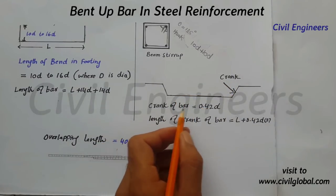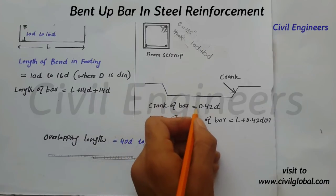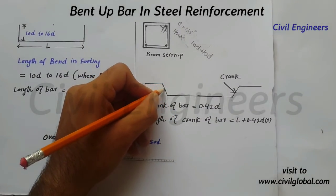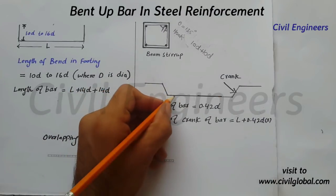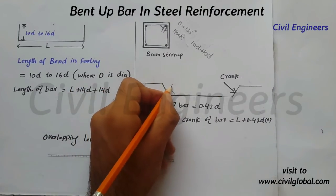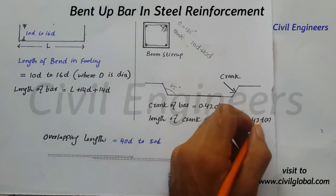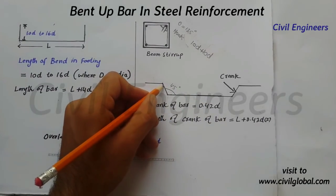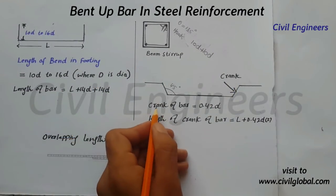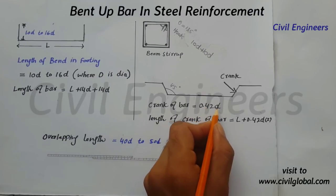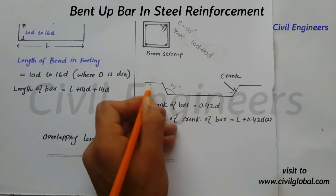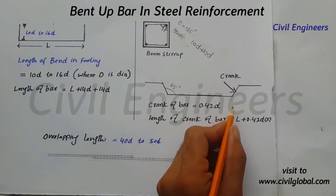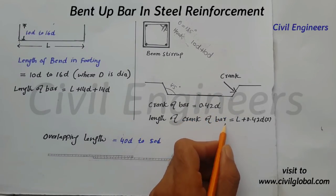The third one is the crank — bend of crank. The crank of bar is equal to 0.42D, where D is the diameter of the steel. This is the length of the bend, and the angle must be 45 degrees. We add the length of the bend for each crank using the formula: crank of bar equals 0.42D. We also add 0.42D for the second crank, giving 0.42D plus 0.42D.